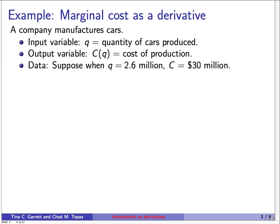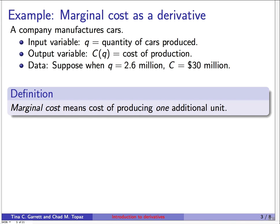Here's our first applied example: marginal cost is a derivative. This is an example from economics. Suppose a company manufactures cars. The input variable is Q, the quantity of cars produced, and the output variable is C, the cost of production. Suppose we're currently producing 2.6 million cars and the cost is $30 million. Marginal cost means the cost of producing one additional unit, and I want to show you that this is a derivative.